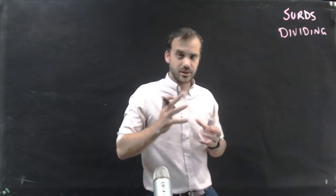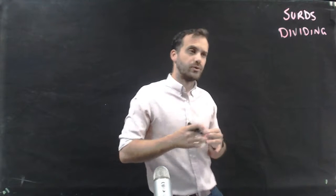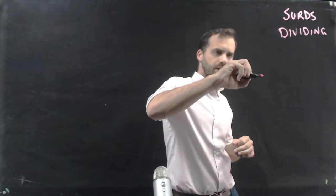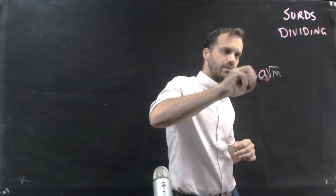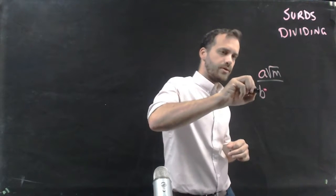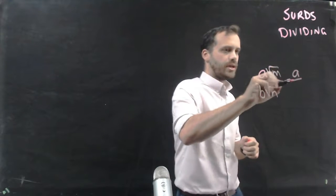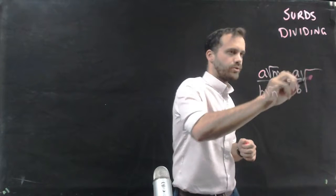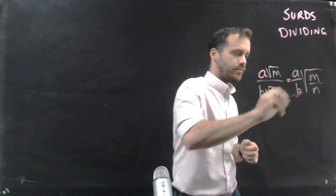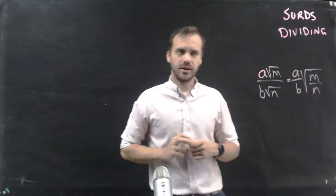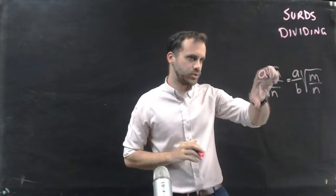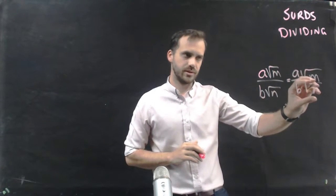So dividing surds this time, let's look at the general form so we get a feel for what this is going to look like. a√m over b√n equals (a/b)√(m/n). So you can see we're getting rid of the two surd signs and creating one surd sign here.